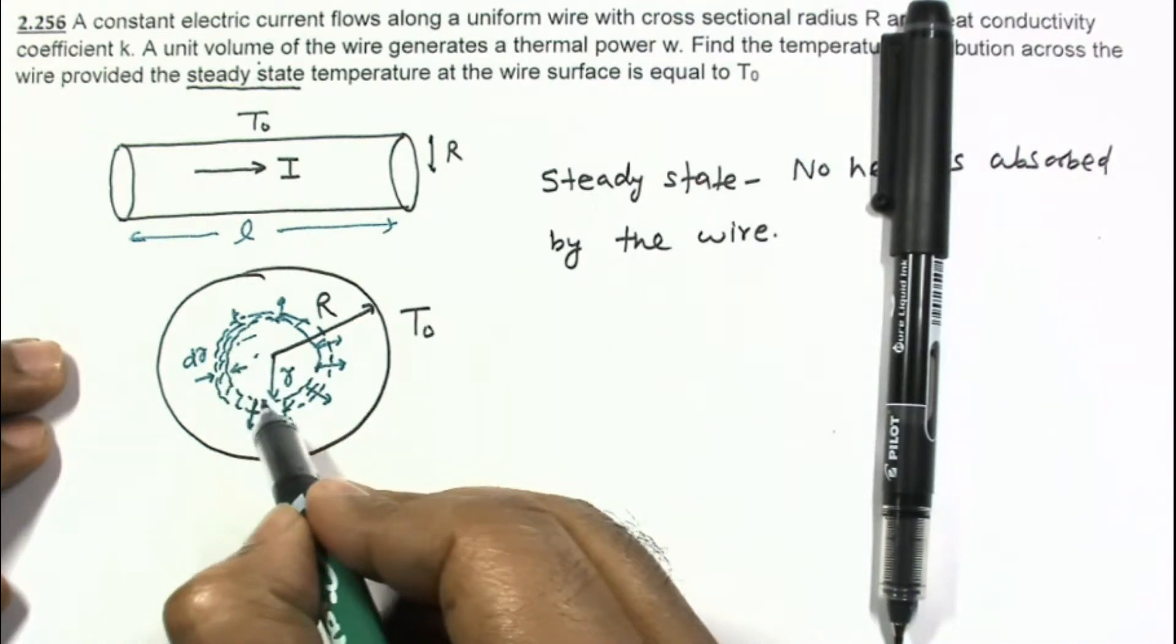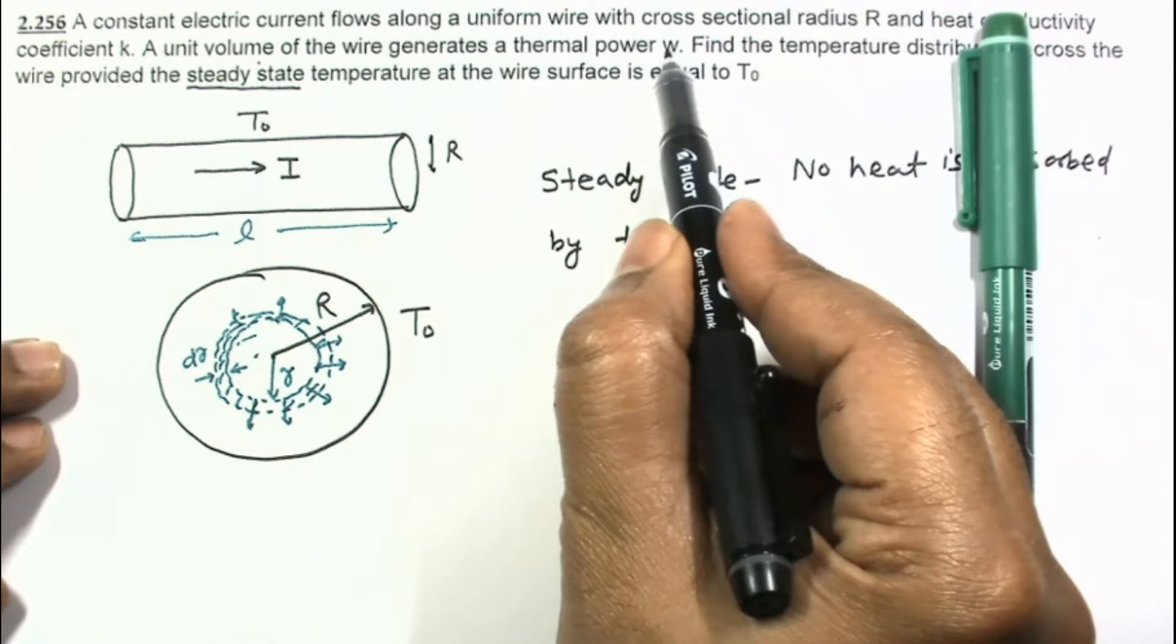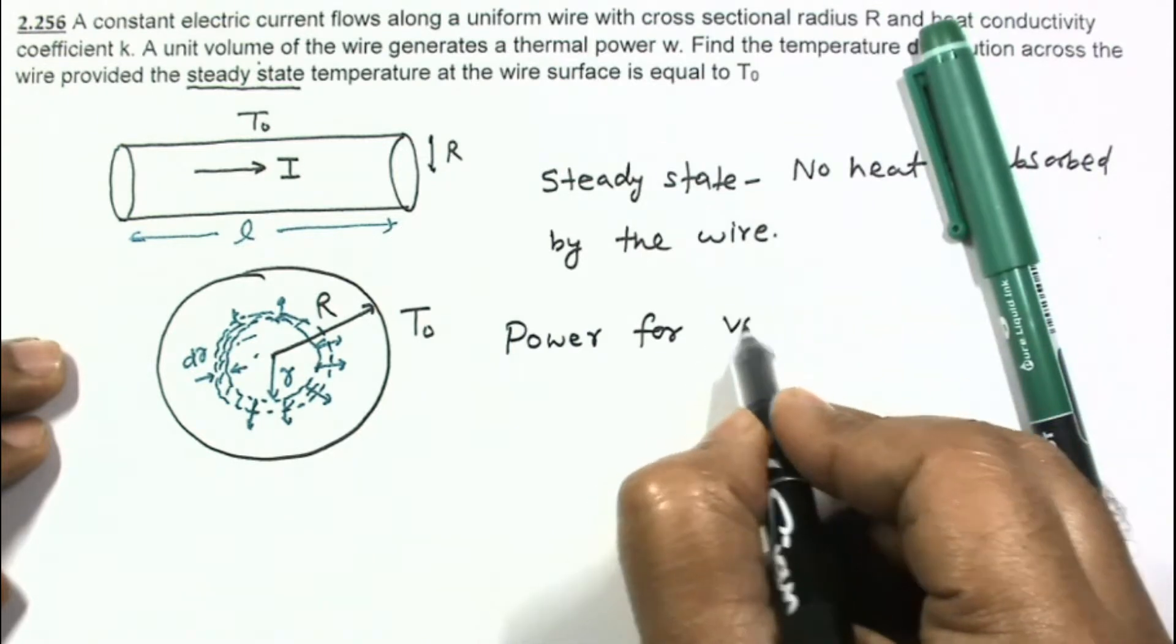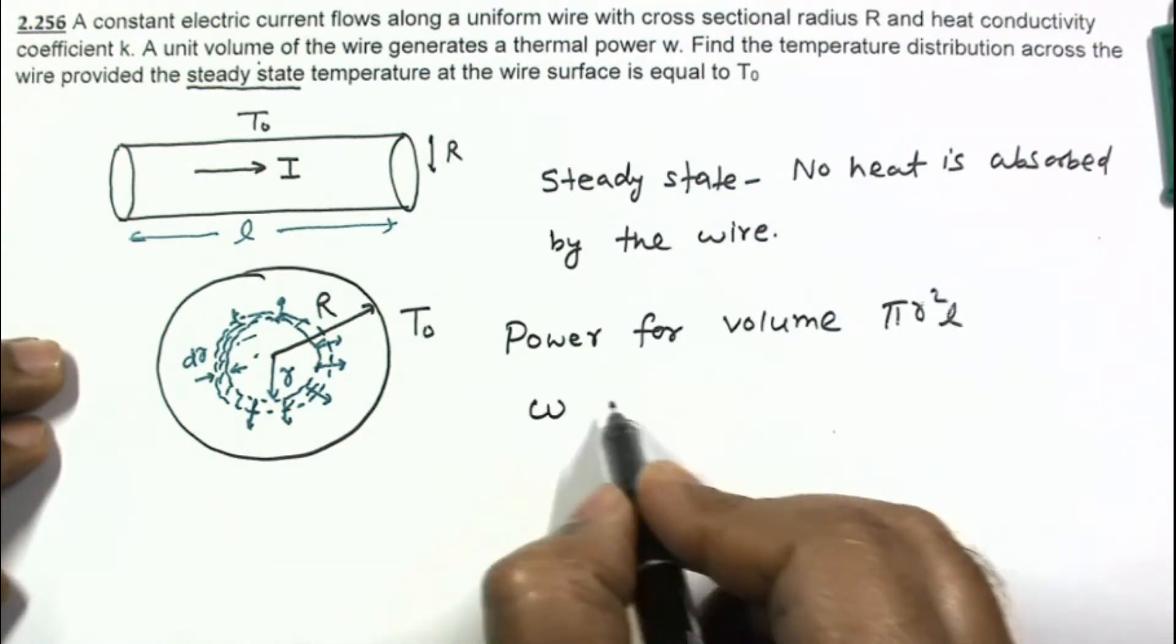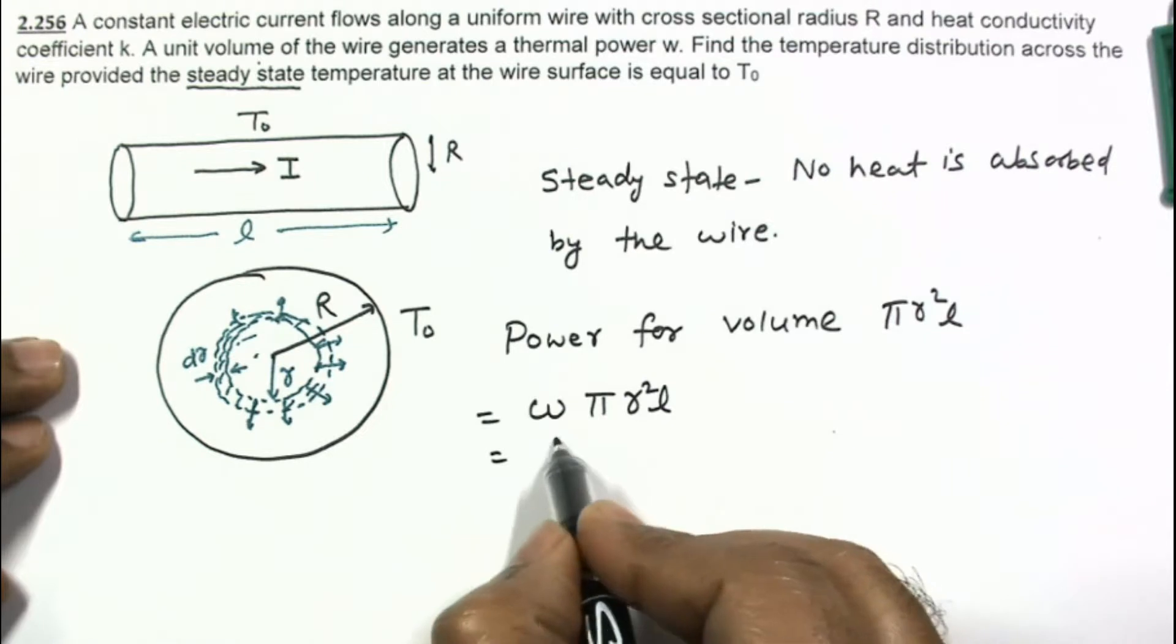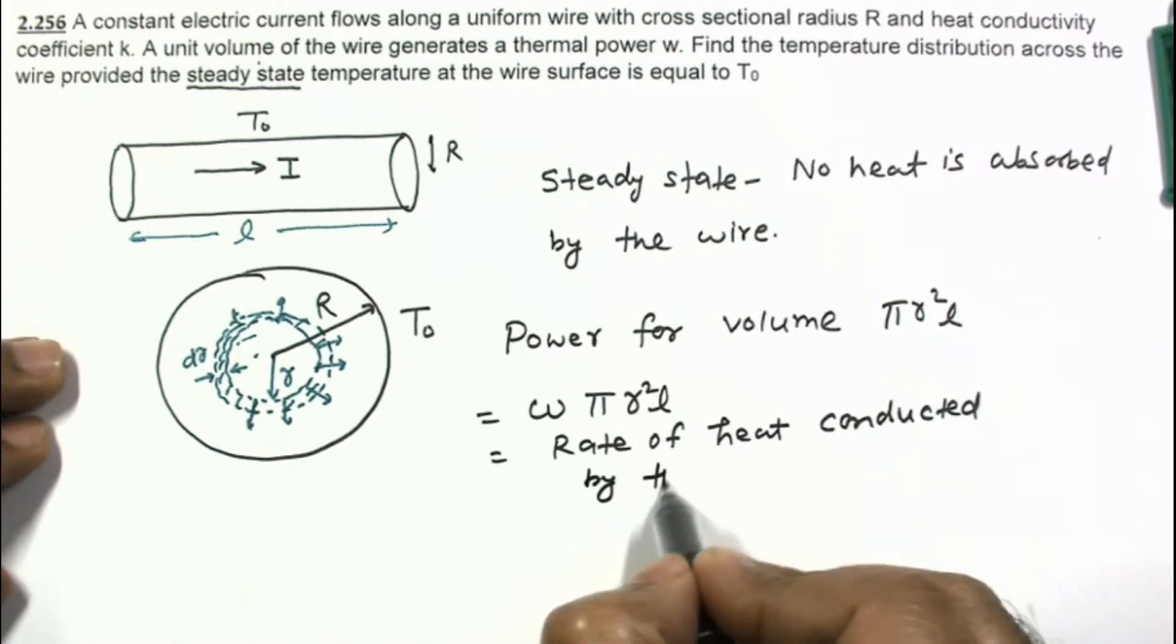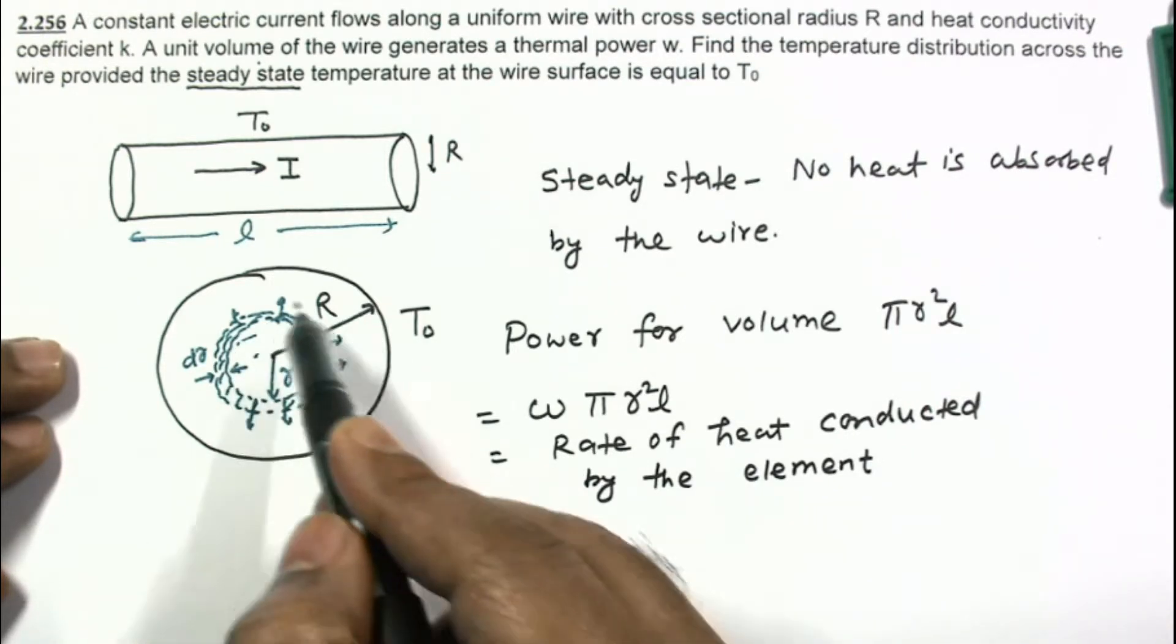Then heat generated in this volume. Per unit volume heat generated per unit time is W. Power for volume πr²L is W times πr²L. And this is the rate of heat conducted by the element.